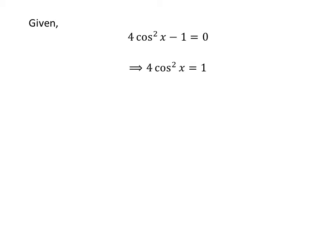Moving minus 1 from the left hand side to the right hand side gives us 4 times square of cosine of x is equal to 1. Dividing the whole equation by 4 gives us square of cosine of x is equal to 1 upon 4. Taking the root of both sides gives us cosine of x is equal to plus and minus half.